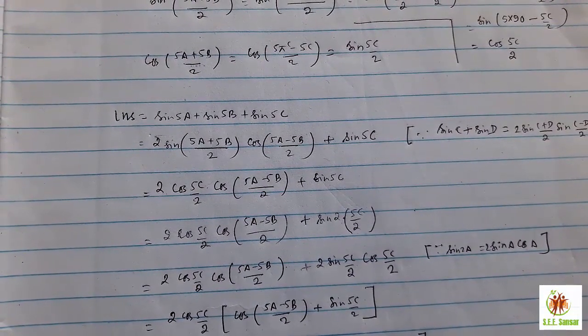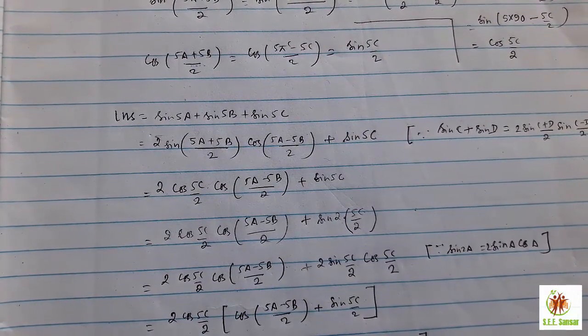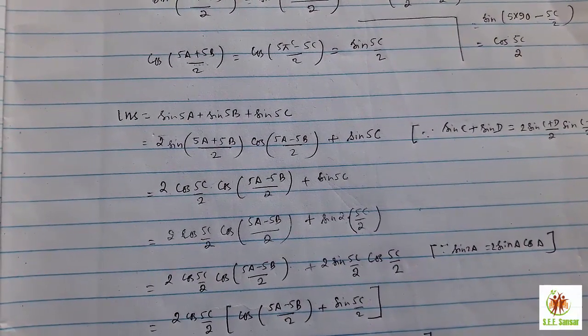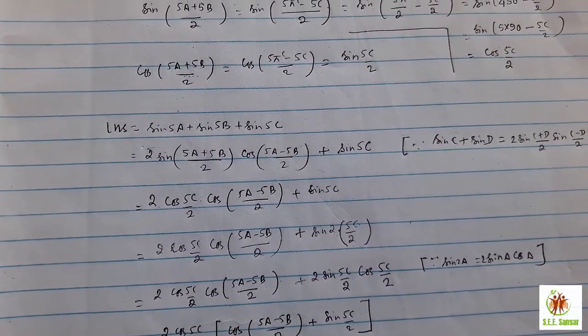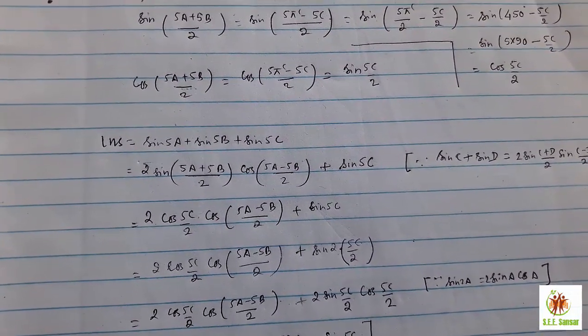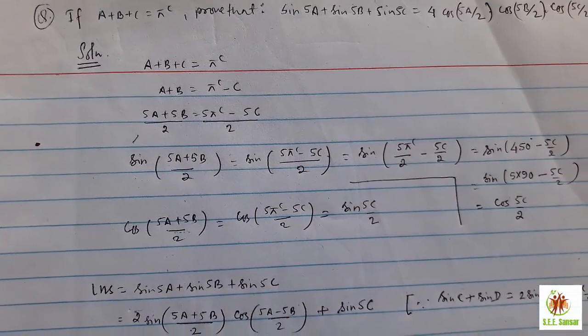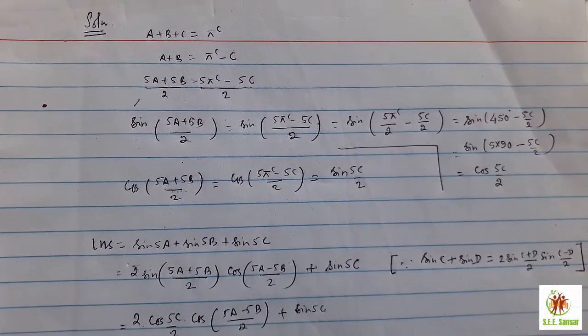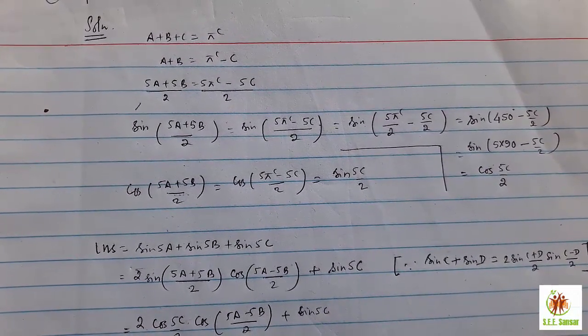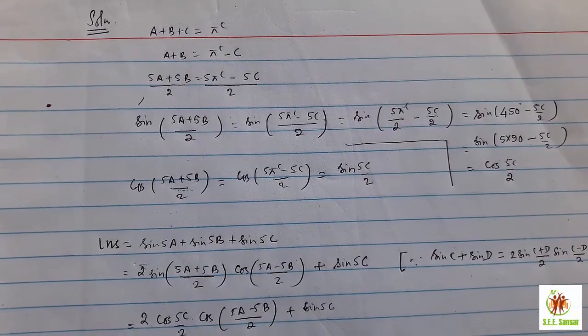It may be sin c plus sin d or it may be cos c plus cos d formula or cos c minus cos d. Among that, we are using the expression. In your LHS part there is sin term, so we are using sin c plus sin d formula. We cannot generate that 5a minus 5b by 2 from our given condition. Given condition a plus b plus c equal to π radian. So we try to use the formula of 5a plus 5b by 2 with another.